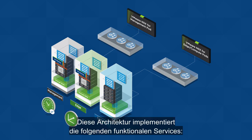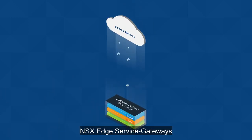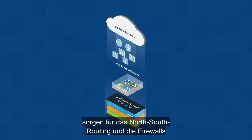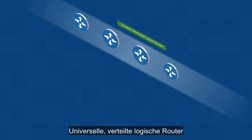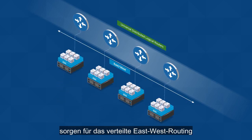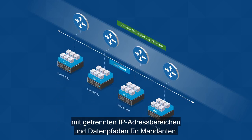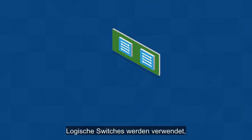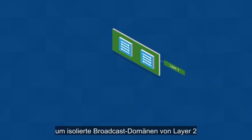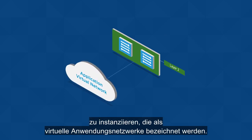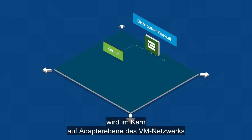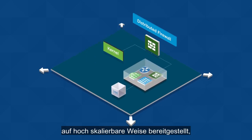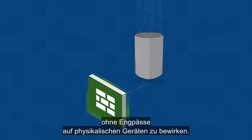This architecture implements the following functional services. NSX edge service gateways provide north-south routing and firewalling between the software-defined data center and any external networks. Universal distributed logical routers supply east-west distributed routing with tenant IP address space and data path isolation. Logical switches are used to instantiate isolated layer 2 broadcast domains referred to as application virtual networks. A distributed firewall is deployed at the kernel and VM network adapter level in a highly scalable manner without creating bottlenecks on physical appliances.